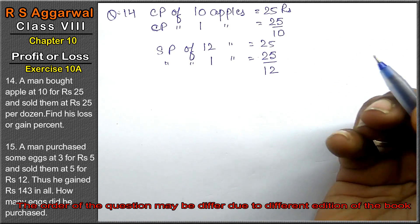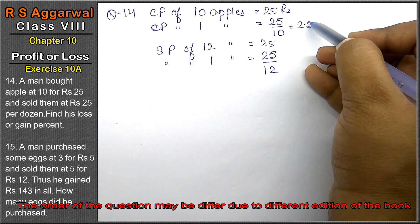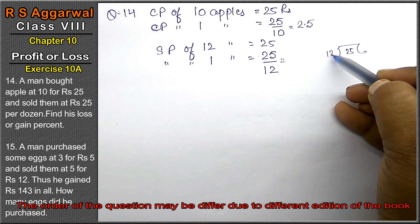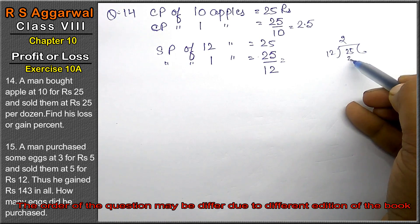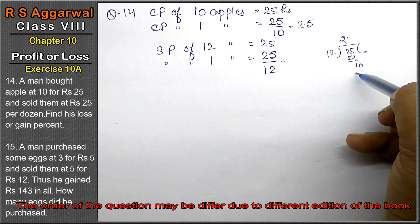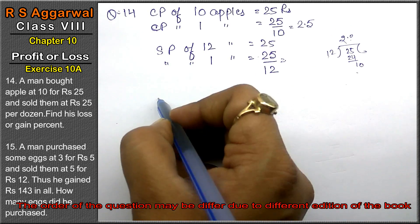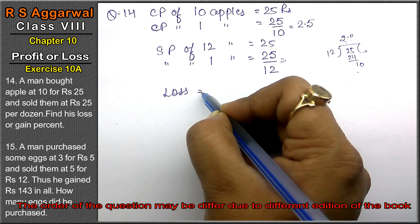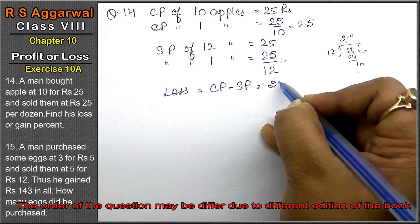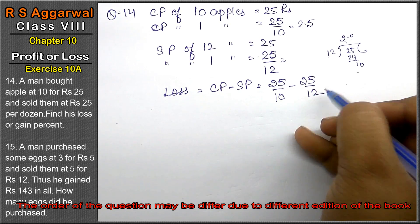SP of one apple is 25 upon 12, which is approximately 2.08. Since SP is less than CP, that means there is a loss. Loss value is CP minus SP, so CP is 25 upon 10 and SP is 25 upon 12.